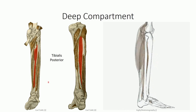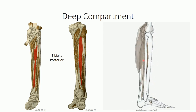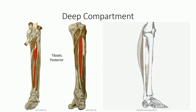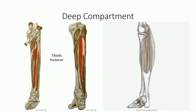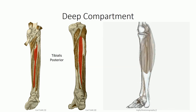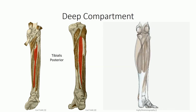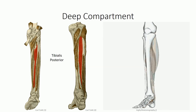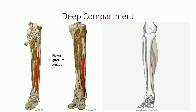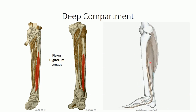Entering the true posterior compartment, we start with tibialis posterior. It lies centrally in the compartment and originates off the interosseous membrane and adjacent portions of the posterior surface of the tibia and fibula. The tendon runs medially to pass posterior to the medial malleolus, deep to the flexor retinaculum, and has a rather extensive insertion on the navicular, cuneiform, and first four metatarsal bones. This muscle is comparable to the flexor carpi muscles in the forearm and is exclusively involved with plantar flexion and inversion.